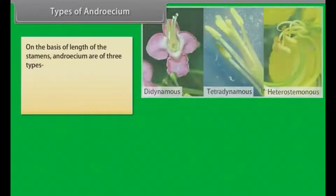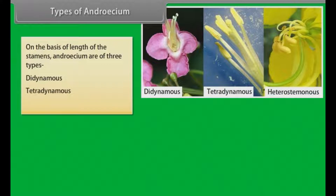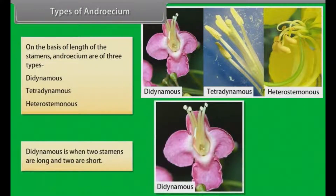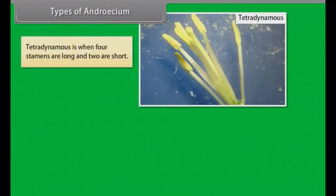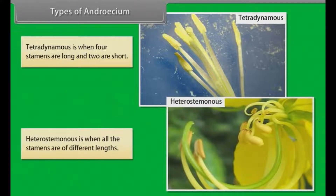Types of androecium. On the basis of length of the stamens, androecium is of three types. Didynamous: when two stamens are long and two are short. Tetradynamous: when four stamens are long and two are short. Heterostaminous: when all the stamens are of different length.